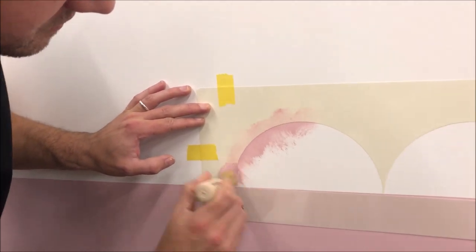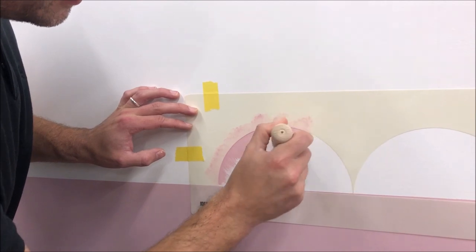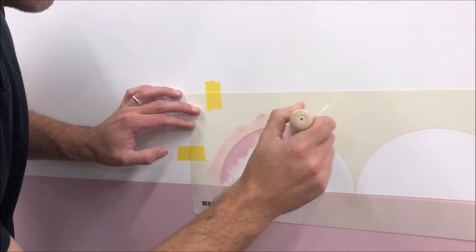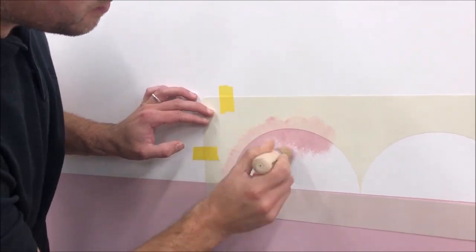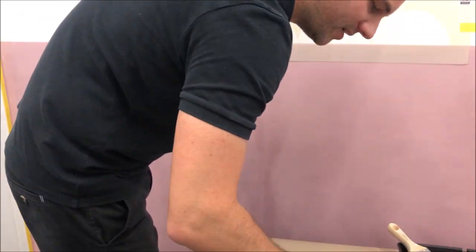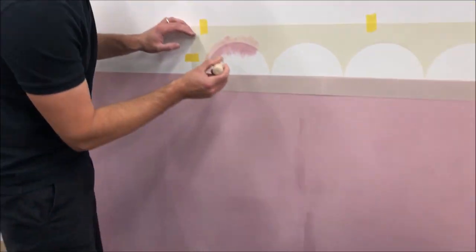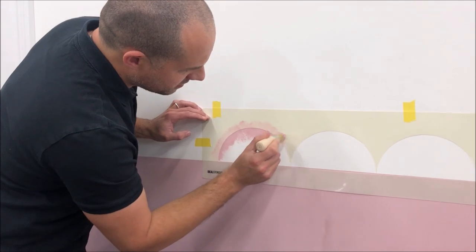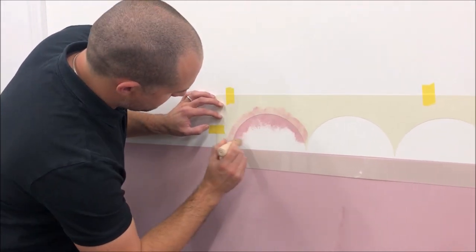So I'm stenciling around the edges of the shape, which is going to give us a nice crisp line. As you can see, I'm slightly brushing inwards from the edges of the shape. When your brush starts to feel like it's getting a bit dry, then you need to get some more paint on your brush. Make sure that you wipe it off before you start stenciling again. And then it's back to there.